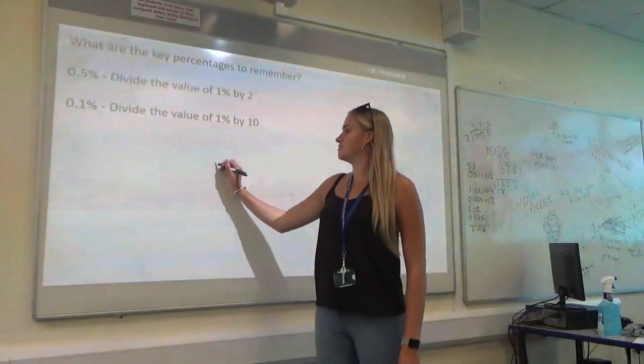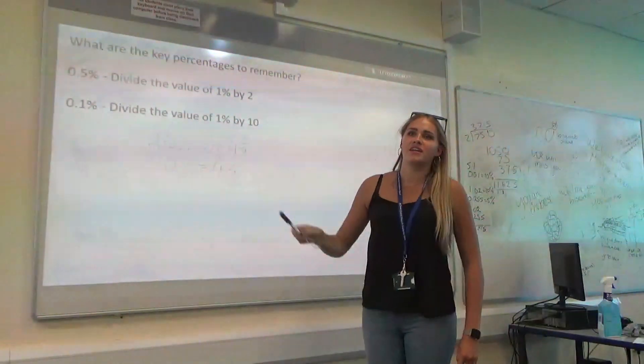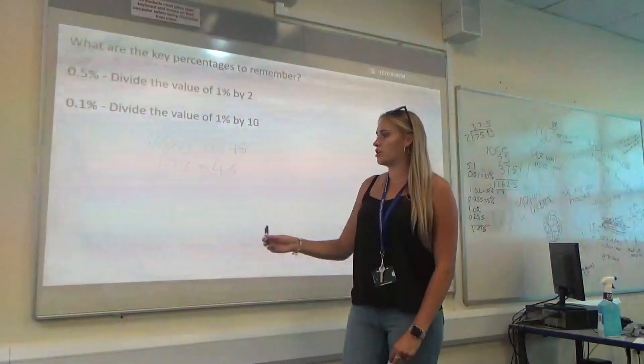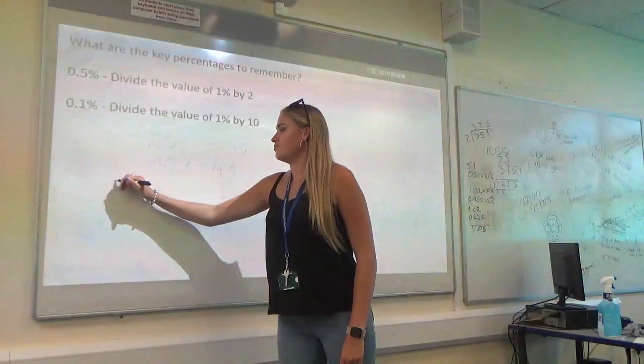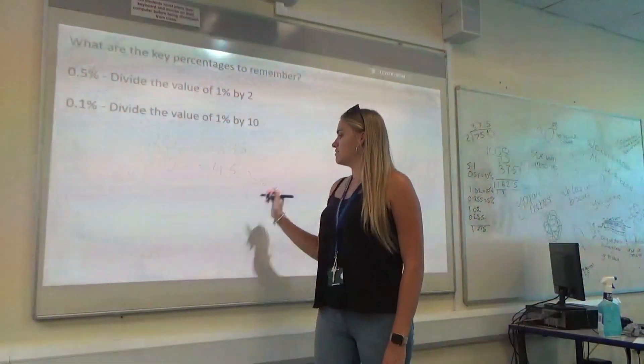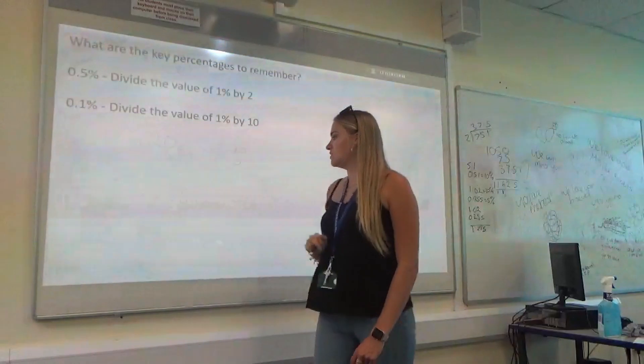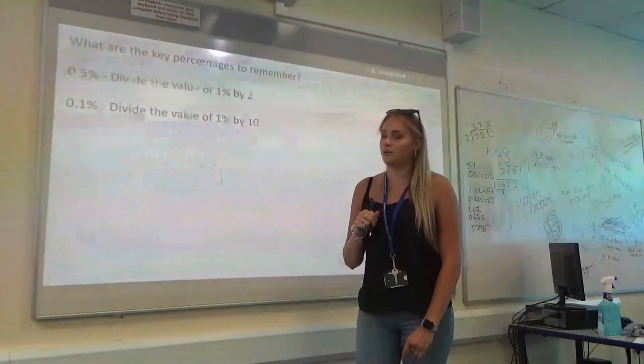So, I get 4.5. To get from 10% to 20%, we're going to multiply by 2. So, I know that 20% of 45 is going to be 9.